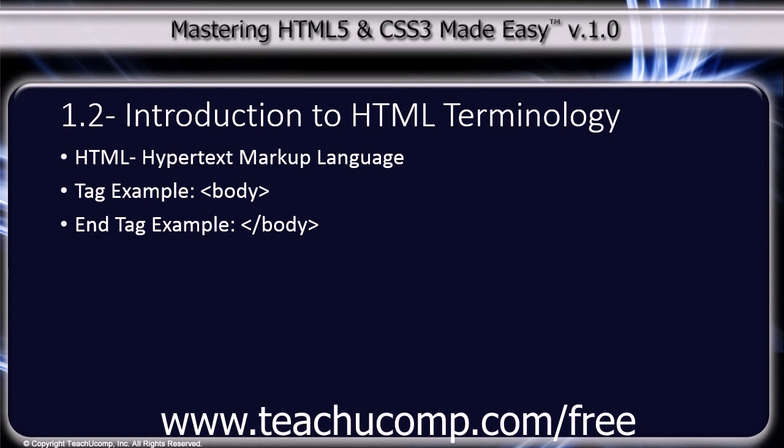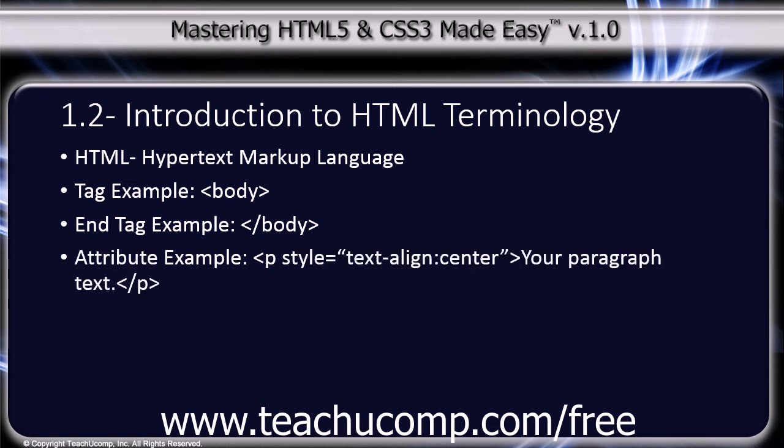Many attributes require that you also set a value, such as a measurement or specification. For example, if you wanted to center a paragraph on your web page, the code would look like this. In this example, style is the attribute for the paragraph's text, and text-align colon center is the value. Values are always surrounded by quotation marks. You can apply multiple attributes, separating them with a space in between.